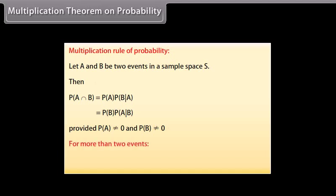For more than two events, P(A ∩ B ∩ C) = P(A) × P(B|A) × P(C|A ∩ B).